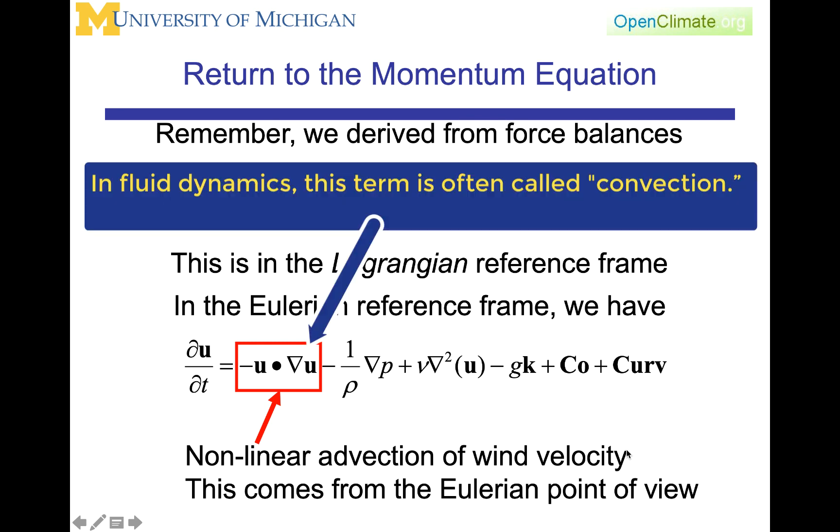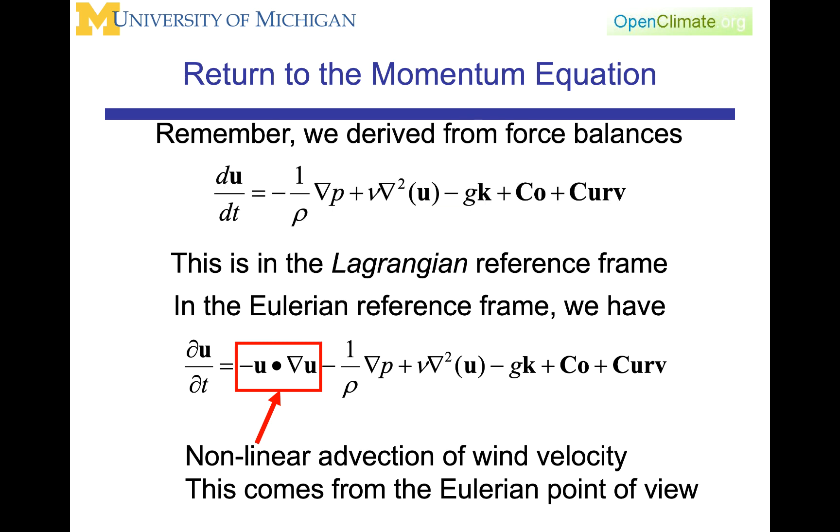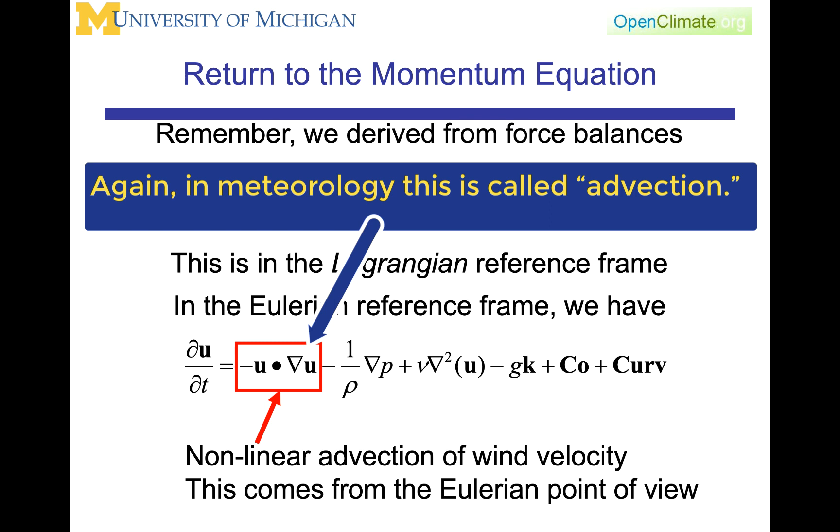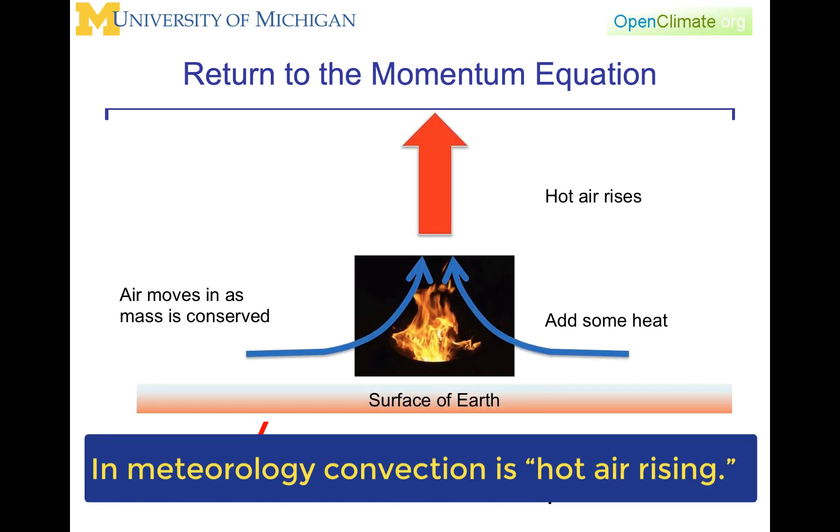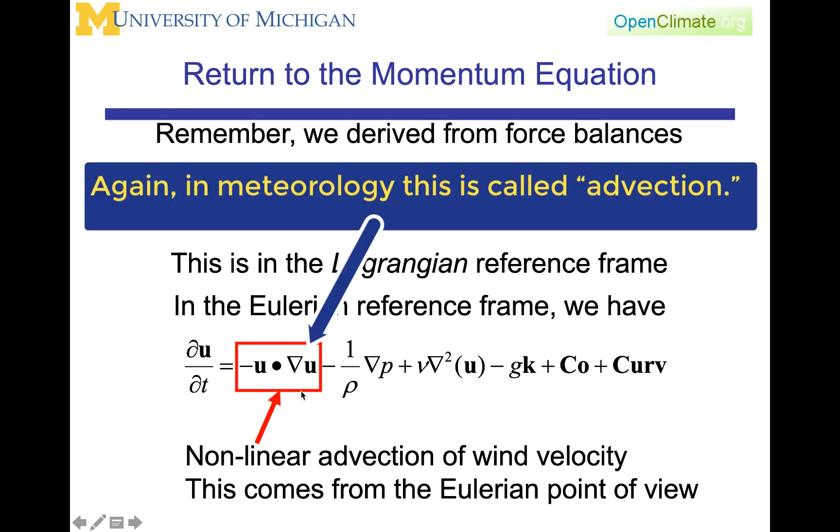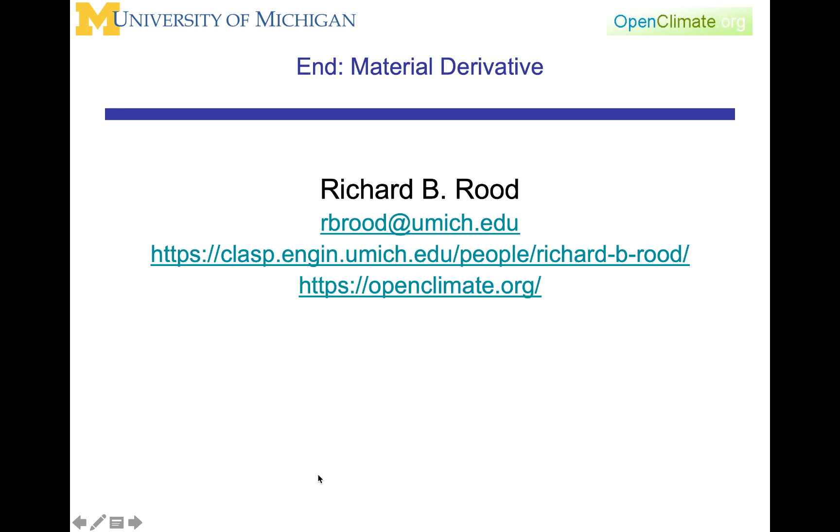In fluid dynamics, this is often called convection, but in meteorology, we generally call this term advection, and we reserve convection for that process in which heat is applied at the surface, and then there is vertical motion that is responding to that heat. We usually call that process convection, and this process here called advection. And with that, I conclude the introduction to the material derivative.